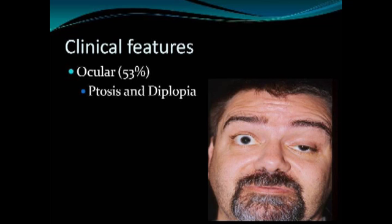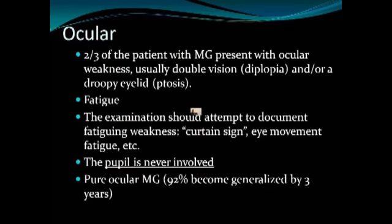Patients come in with episodic double vision or episodic droopy eyelids, with a fatiguing component that's helpful historically. The patient may be normal and then notice double vision at the end of a long day, or droopy eyelids. On examination, you want to stress the neuromuscular junction — have the patient look back and forth, up and down, and look up at the ceiling for two minutes. You're looking for the curtain sign, where the eyelid slowly comes down, indicating fatiguing weakness.